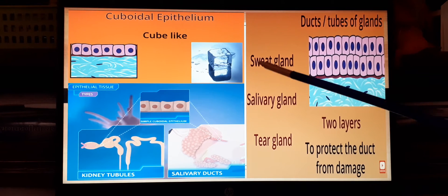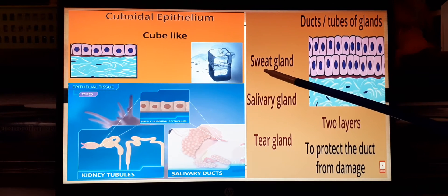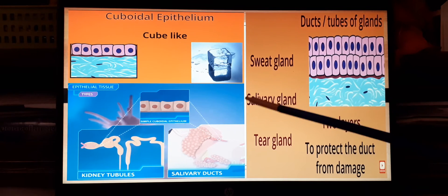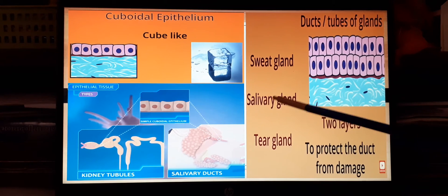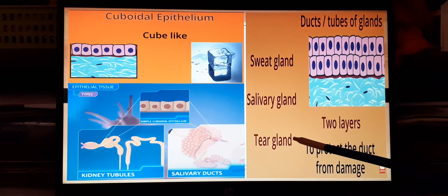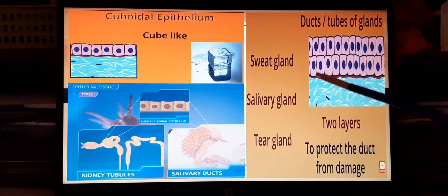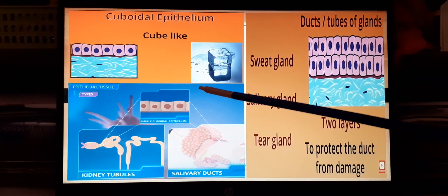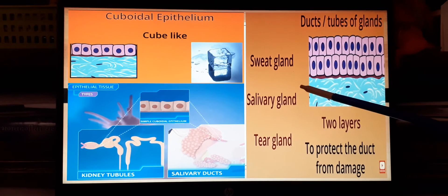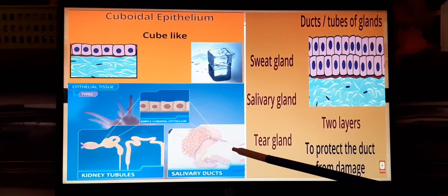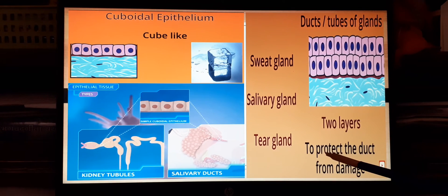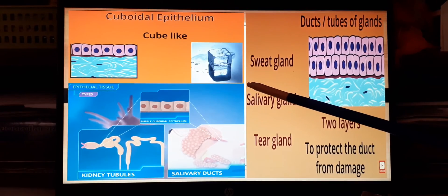Cuboidal epithelium also lines the ducts of various glands — such as the pancreatic duct, sweat glands, salivary glands, tear glands, and thyroid gland — where they may be two-layered. Wherever cuboidal epithelium is present, it helps in protecting that part of the body.